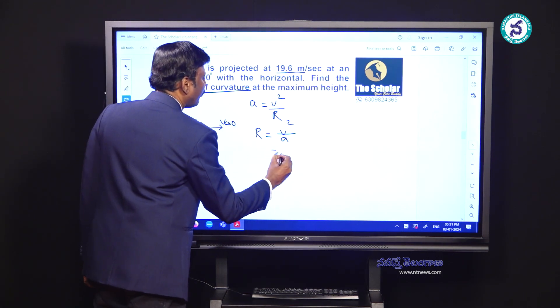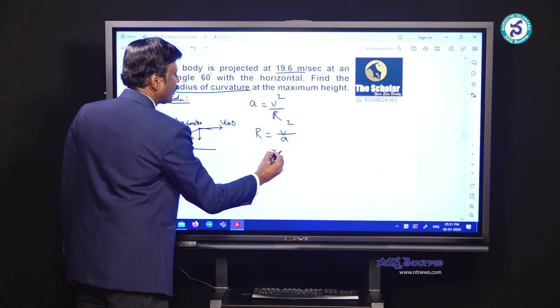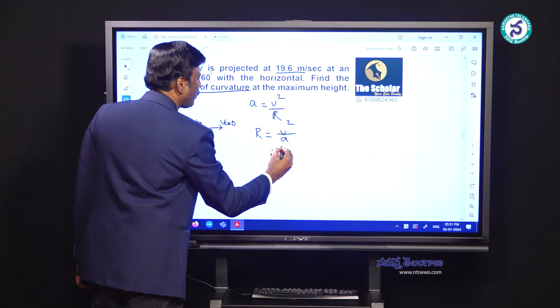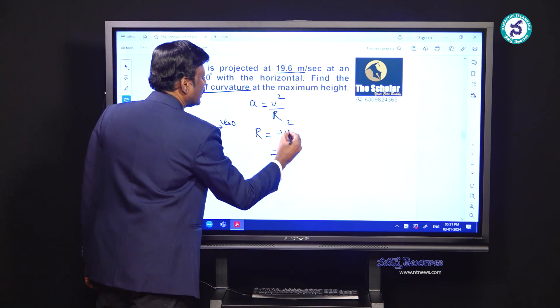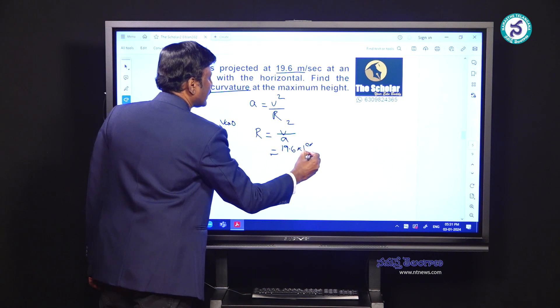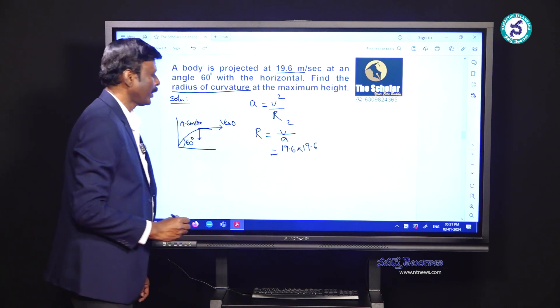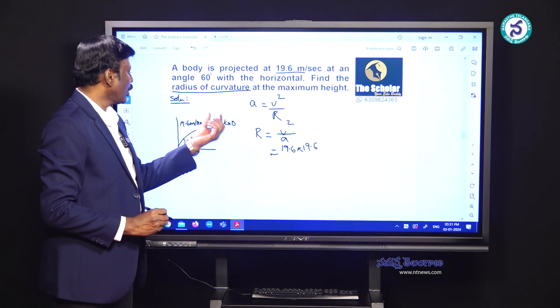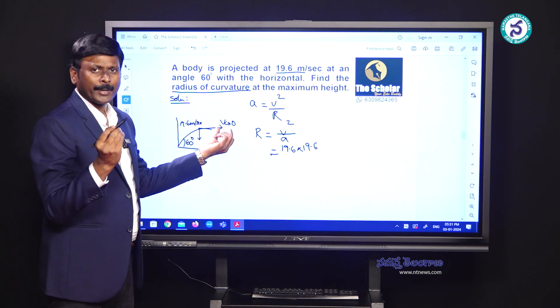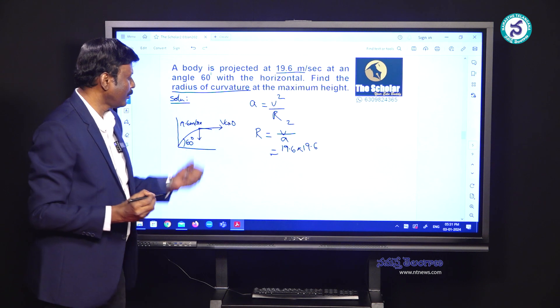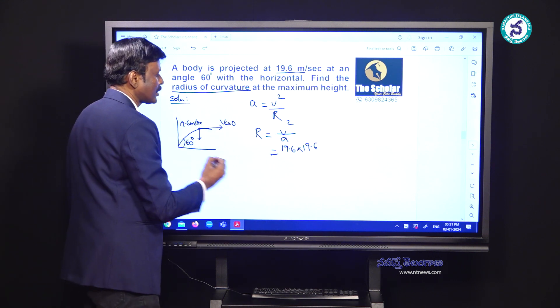Substituting the values given in the numerical, the velocity is 19.6. Since it is squared, you write it as 19.6 into 19.6. As we have already explained that the horizontal component of velocity should be taken as V cos theta and theta being 60 degrees,